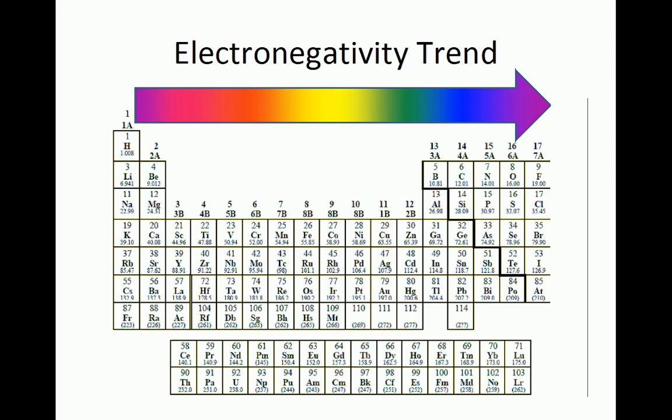Electronegativity increases as we move up a column in the periodic table as higher elements are less shielded from feeling the positive charge of the nucleus. This makes fluorine the most electronegative atom in the periodic table.